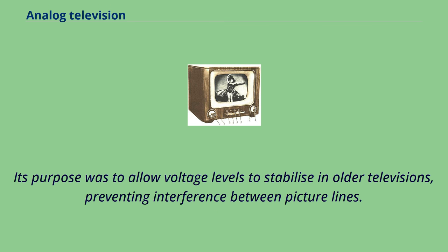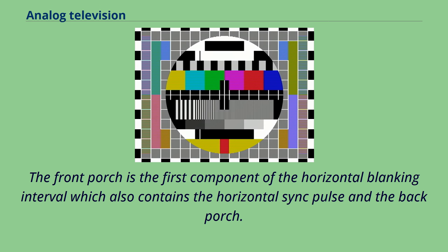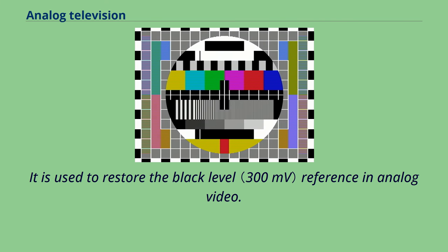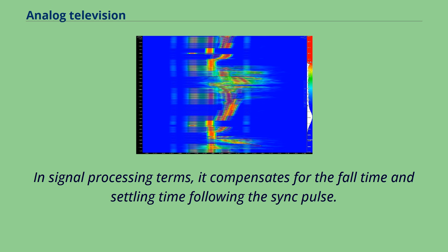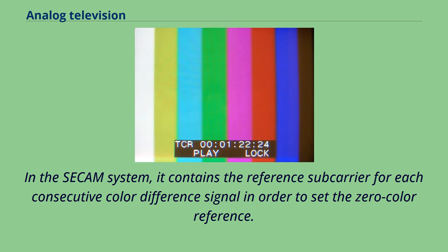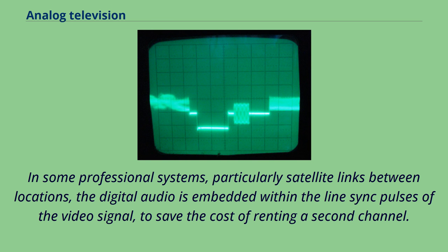The back porch is the portion of each scan line between the end of the horizontal sync pulse and the start of active video. It is used to restore the black level reference in analog video. In color television systems such as PAL and NTSC, this period also includes the color burst signal. In the SECAM system, it contains the reference subcarrier for each consecutive color difference signal in order to set the zero color reference. In some professional systems, the digital audio is embedded within the line sync pulses of the video signal.